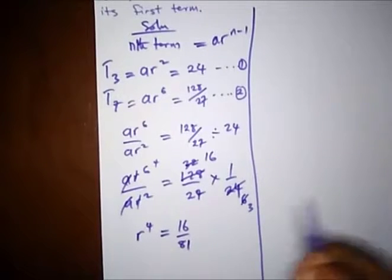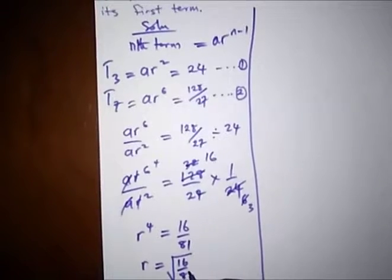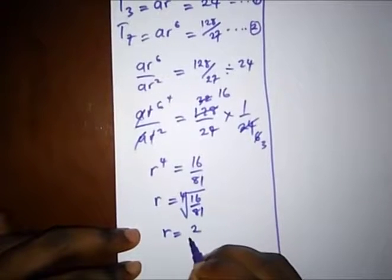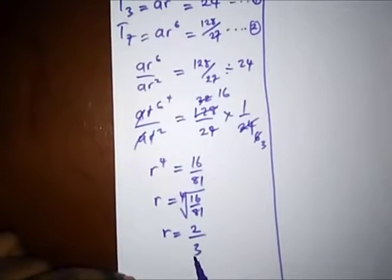So from here, let's find the fourth root of 16 over 81. So r would be, remember a change in subject formula? Fourth root. And what's this fourth root? r is equal to 2/3. Because when you multiply 2 four times, you get 16 and multiply 3 four times, you get 81.